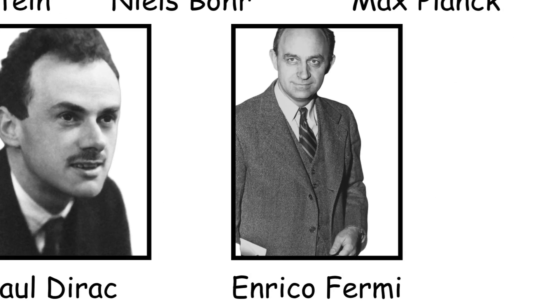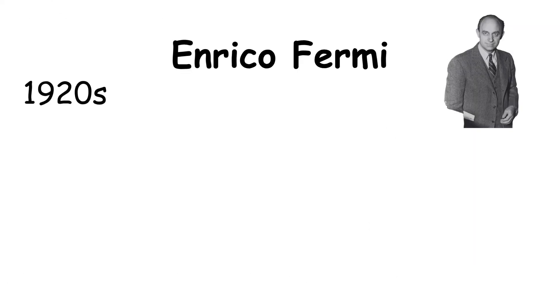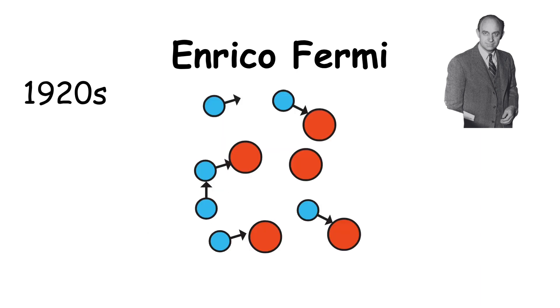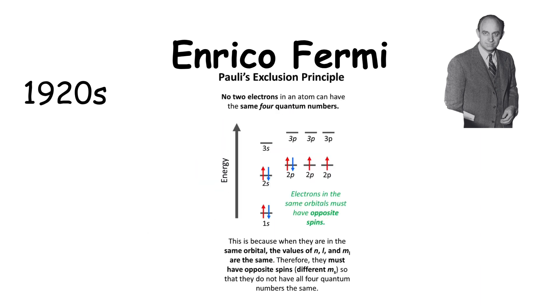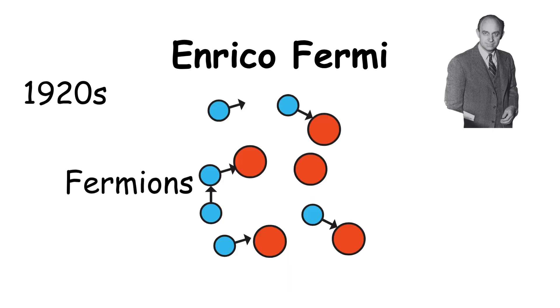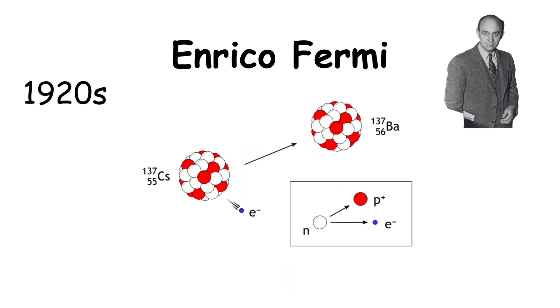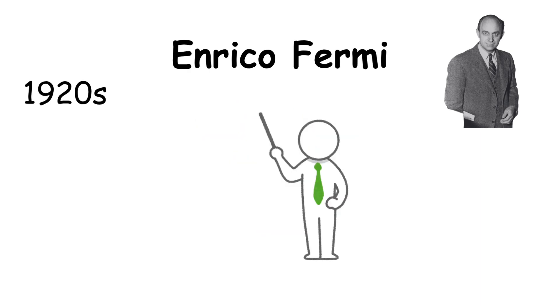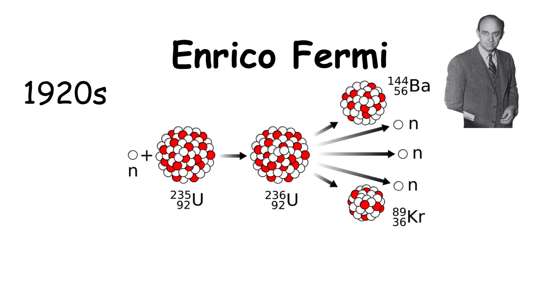Enrico Fermi. In the 1920s, he developed Fermi-Dirac statistics, explaining the behavior of particles that follow the Pauli exclusion principle, now called fermions. He also helped create the theory of beta decay, introducing the idea of the neutrino to explain missing energy in nuclear reactions.